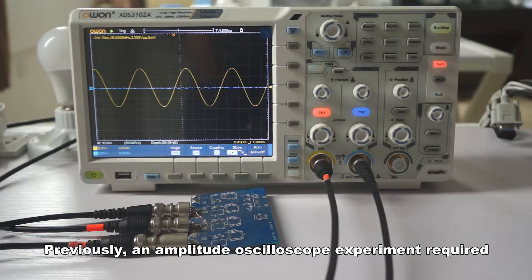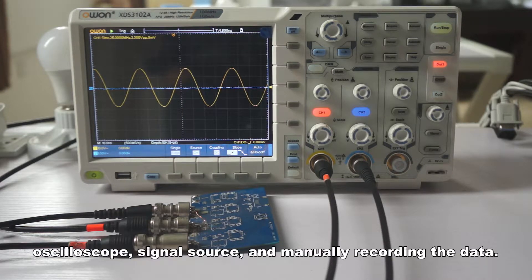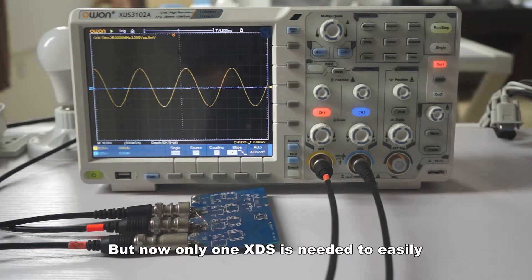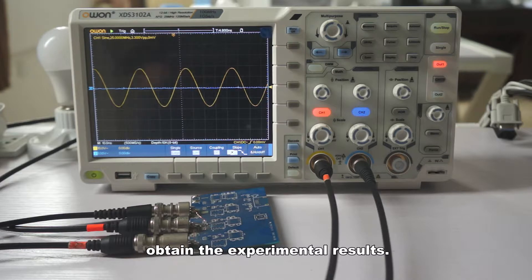Previously, an amplitude oscilloscope experiment required an oscilloscope, signal source, and manually recording the data. But now only one XDS is needed to easily obtain the experimental results.